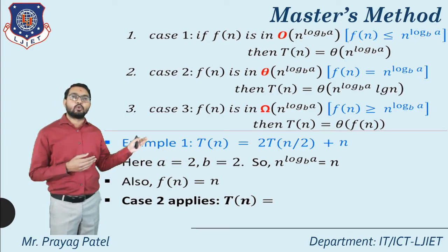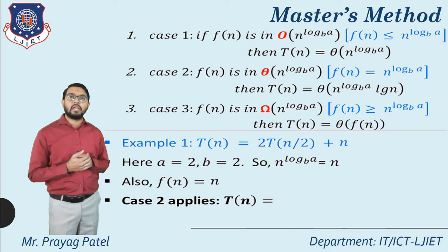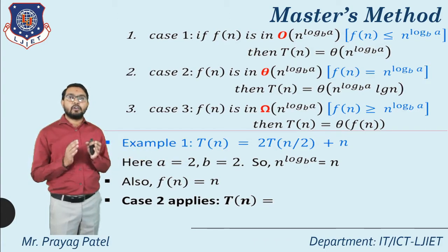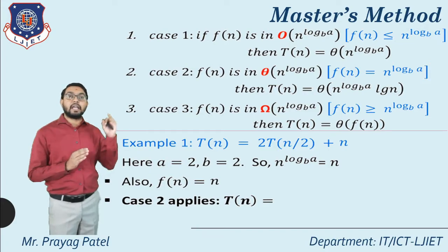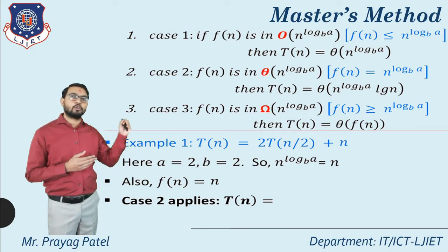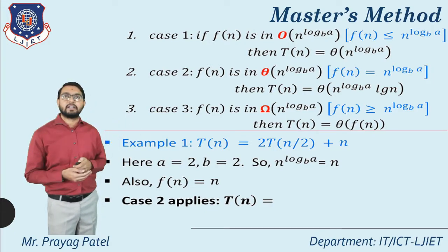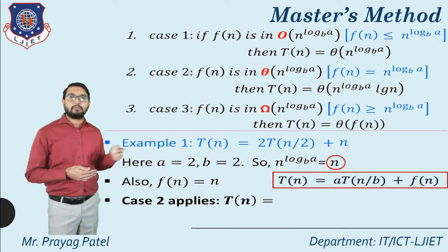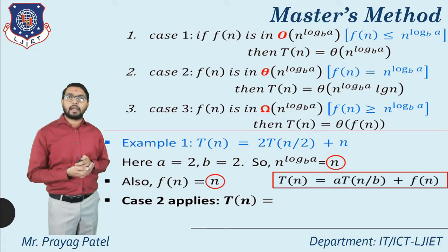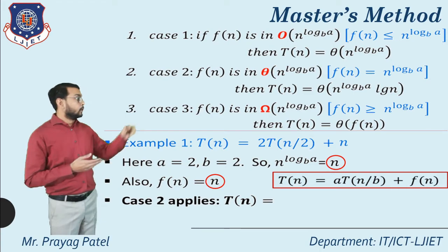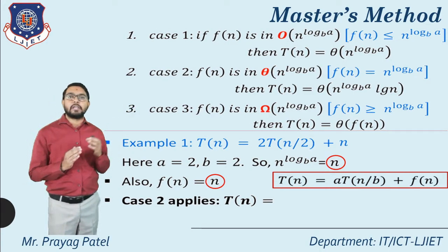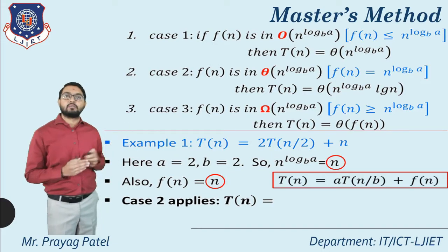Variation example 1: T(n) = 2T(n/2) + n. Here a = 2, b = 2. Find n^(log a base b) = n^(log 2 base 2) = n^1 = n. Also f(n) = n. Since both n^(log a base b) and f(n) equal n, they are equal.